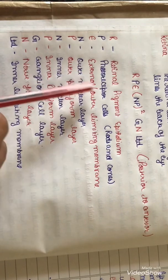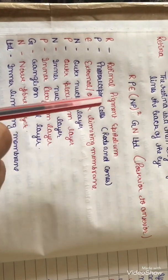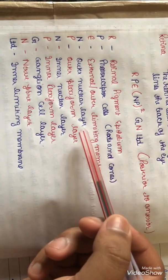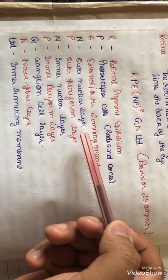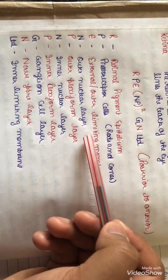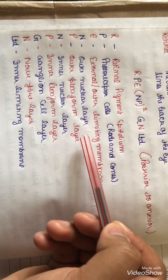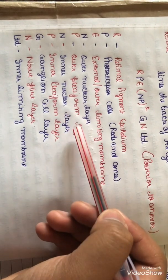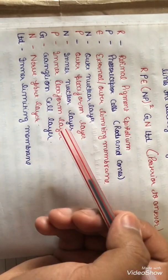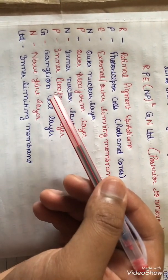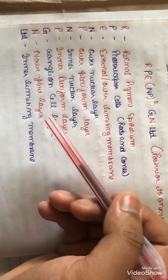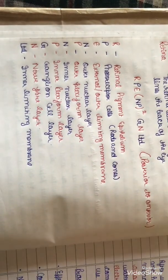Continuing the mnemonic: E stands for External (outer) limiting membrane. The first N stands for Outer Nuclear Layer, the first P stands for Outer Plexiform Layer, the second N stands for Inner Nuclear Layer, the second P stands for Inner Plexiform Layer, G stands for Ganglion Cell Layer, the final N stands for Nerve Fiber Layer, and LIMITED stands for Inner Limiting Membrane.